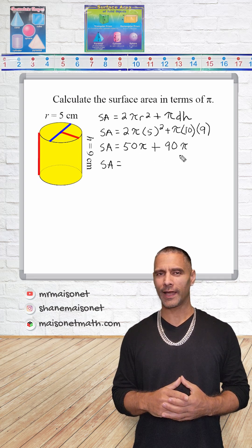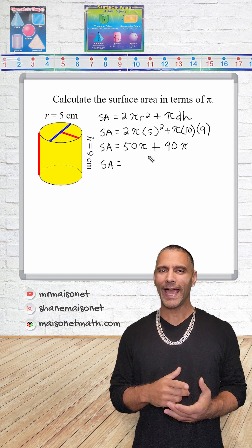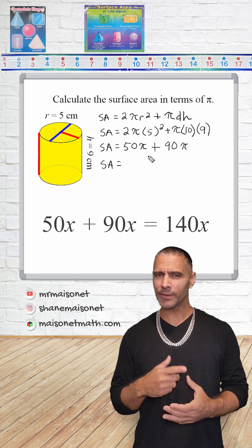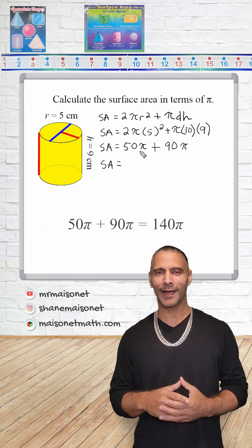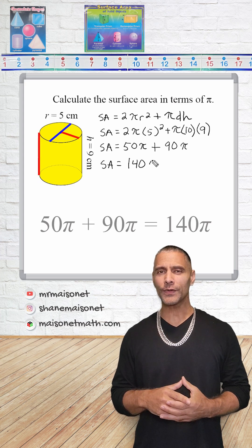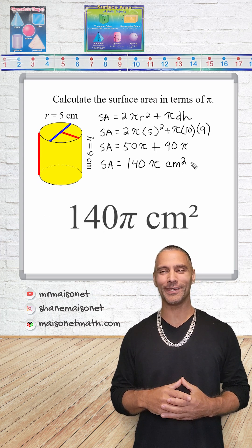All right, let's think of pi as a common factor similar to a variable. For example, adding 50x plus 90x gives us 140x. Similar to this, adding 50π plus 90π gives us 140π. So the surface area of the cylinder in terms of pi is 140π square centimeters.